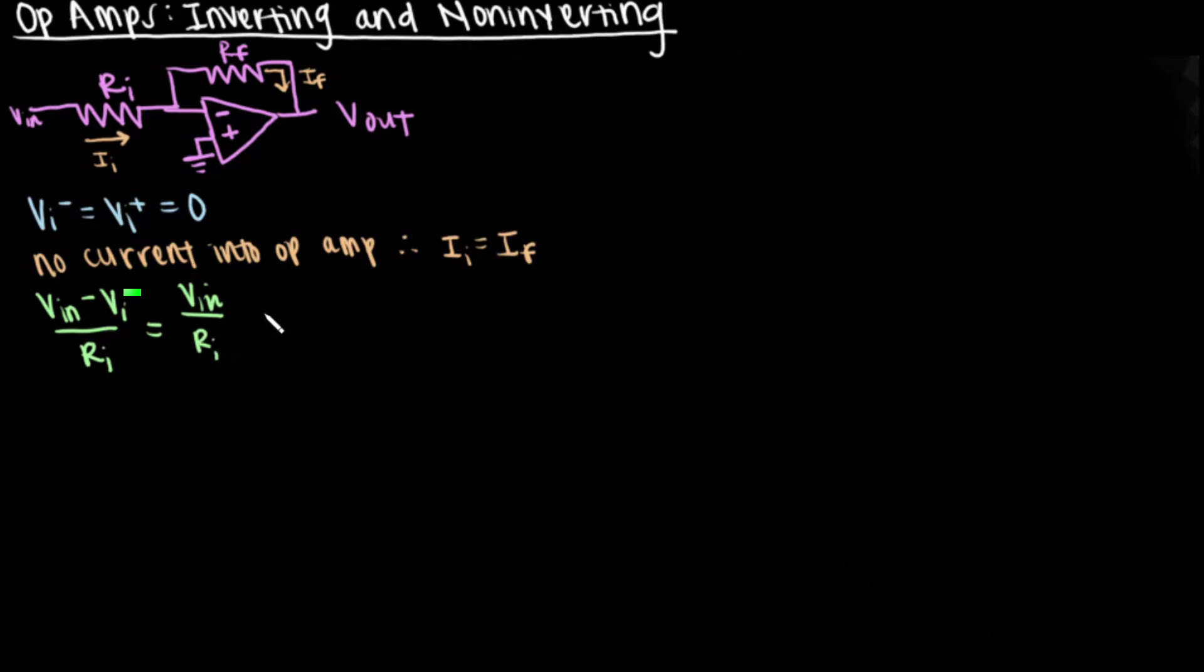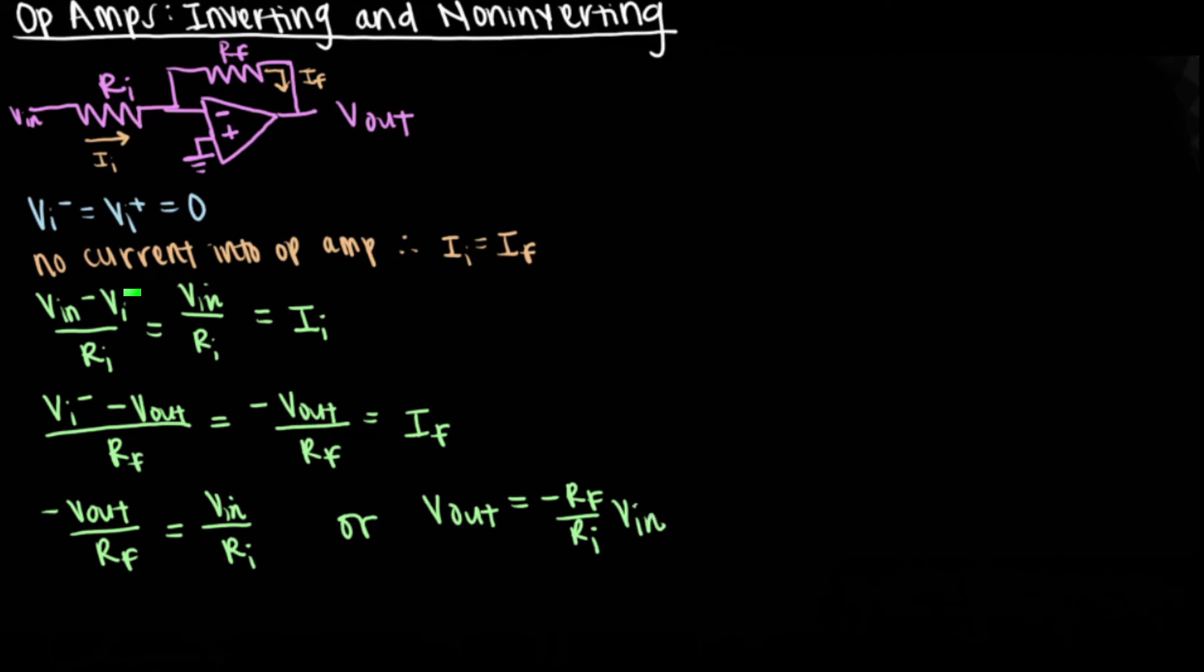Also noted is that there is no current in the op amp, so therefore the current in, denoted II, and the current in the feedback loop, IF, are the same. By doing nodal analysis, we can see that at the inverting input, the difference between VN and VI negative over RI gives II. We can then look at the difference between VI negative and Vout over RF to find IF.